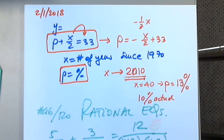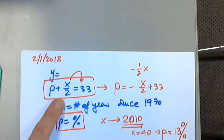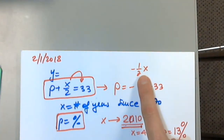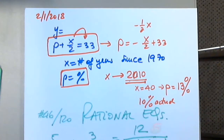A rational equation has at least one fraction with x in the denominator. So an equation is not rational if it doesn't have x in the denominator — like a fraction that is just a number times x. This one has x in the denominator, that's why it's rational.